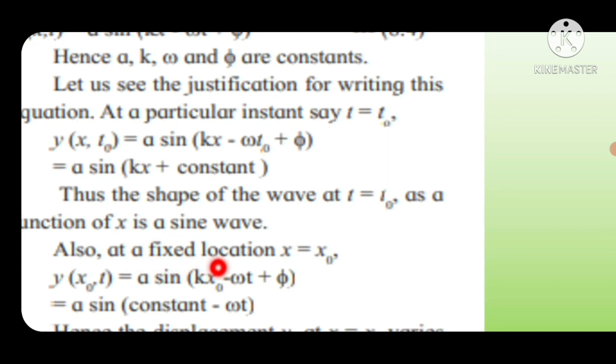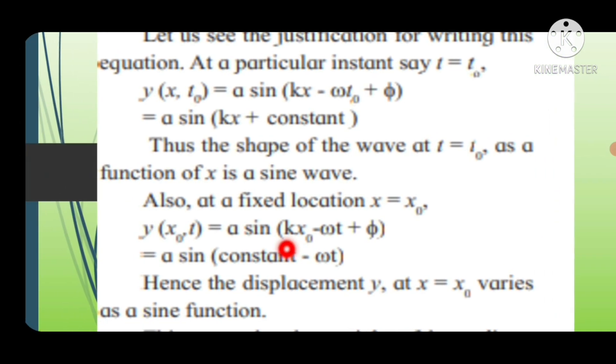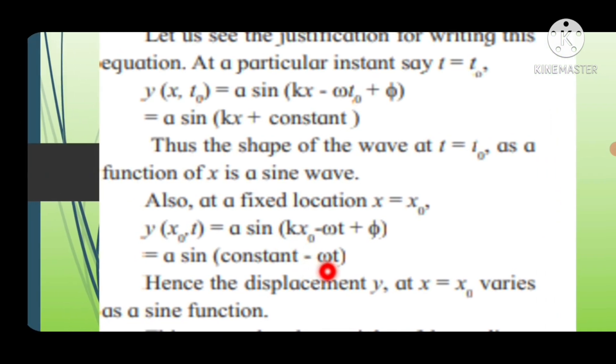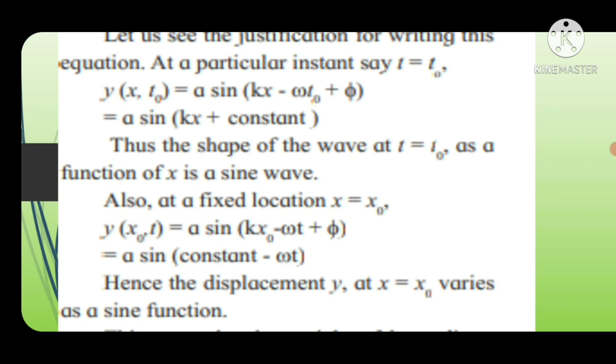Also, at a fixed location x = x₀, y(x₀,t) = a sin(kx₀ - ωt + φ) = a sin(constant - ωt), where kx₀ + φ is constant.